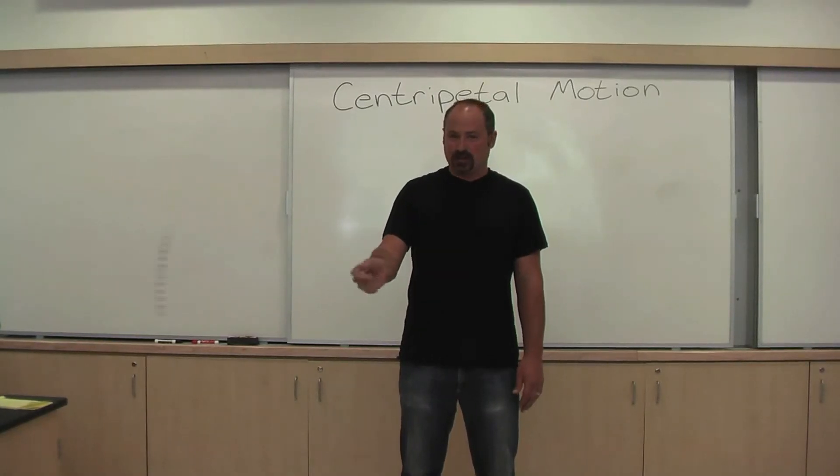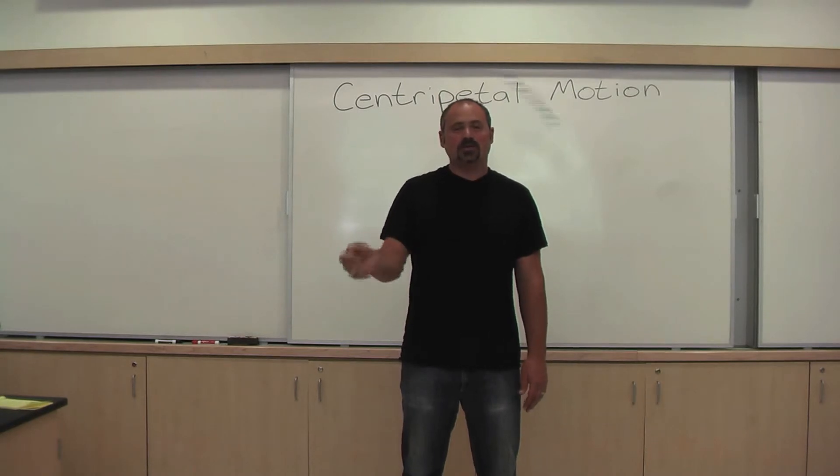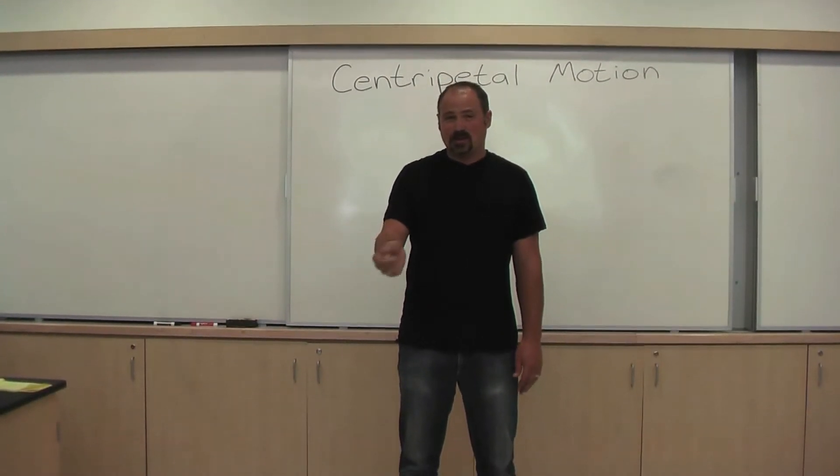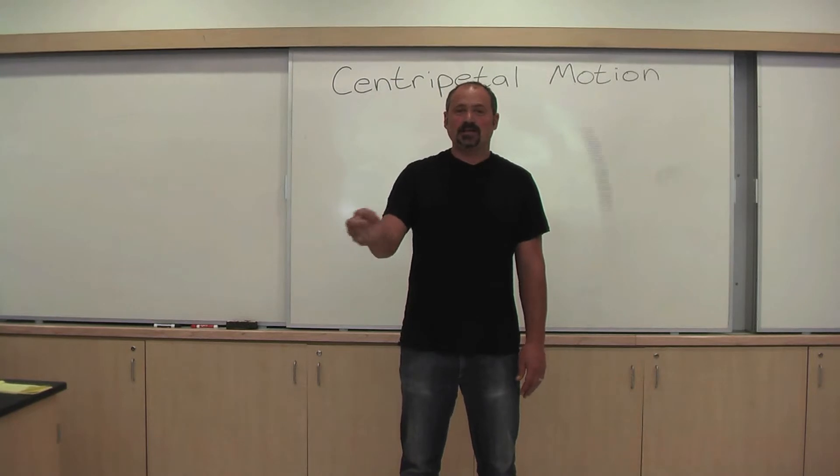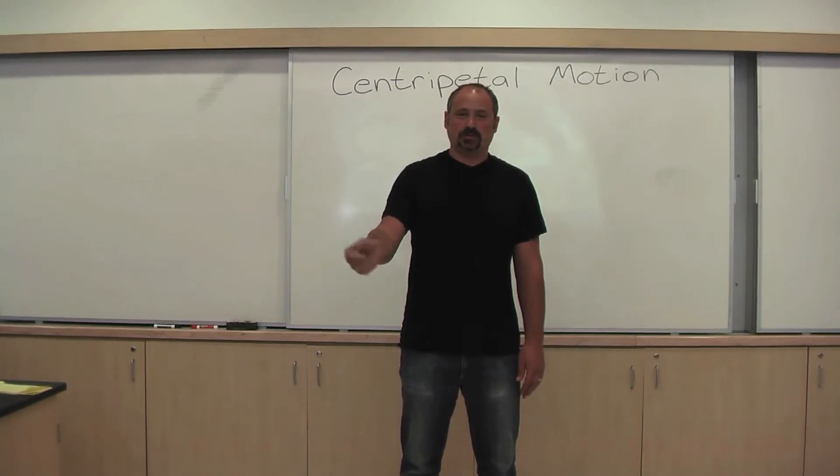Here I have a mass on a string which I'm spinning in a circle. It's going at constant speed, or at least as constant as I can make it. That's the definition of centripetal motion, circular motion at constant speed.